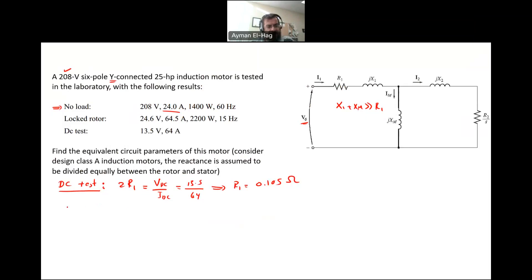How to find that? Very simple. X1 plus XM equals the single-phase voltage, which is 208 divided by root 3, divided by the current which is 24 amps. This gives me 5 ohms. I found the summation, a lump sum of X1 and XM.